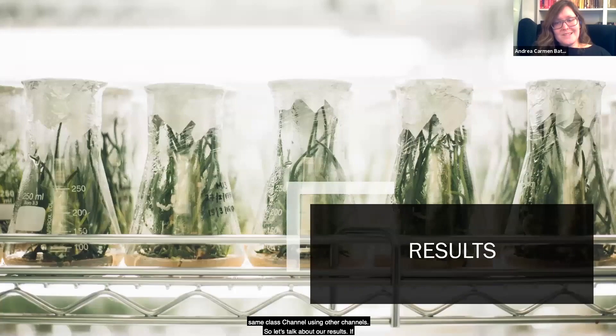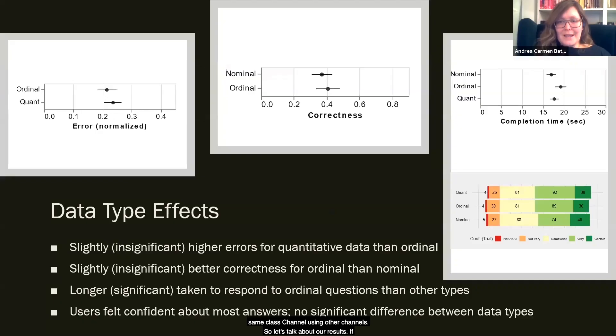So let's talk about our results. If we look at the effects of different data types as a factor for user task completion, the error size and the correctness differences are negligible. There's also very little difference in the Likert scale responses to confidence, and the participants did take slightly longer to answer questions about ordinal data. But overall, there's very little difference across these different data types when taken in aggregate.